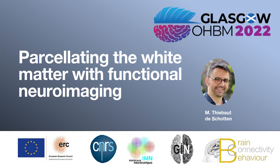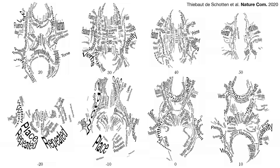Thank you very much. Now we've seen how to divide the white matter anatomically and divide the cortex based on structural connectivity. In a recent work, we published these maps where we divide the white matter based on task-related functional activation that happened in the cortex, which we decode with the white matter. For this educational session, I'll walk you through how to do this kind of decoding so that you can run it yourself.